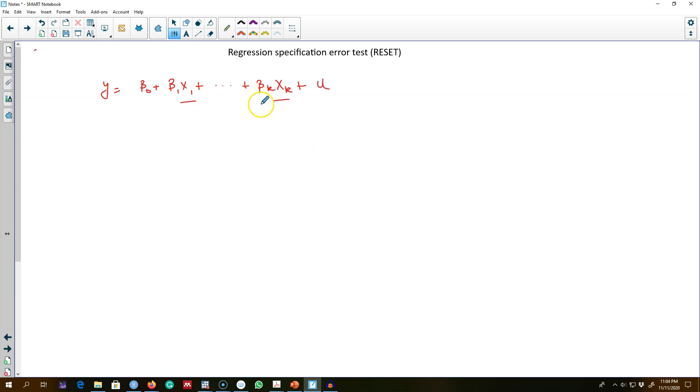What we can do is start by estimating our model and get the fitted values of y. Then we can estimate a model of the form—this is the estimated values of y hat that we get from estimating our original model—and then we can include a square term of this y hat and a cubic term of this y hat variable in the model.